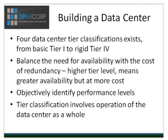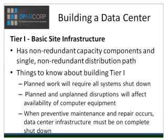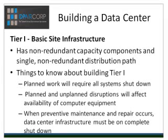If operators building a data center have very basic requirements consistent with a server room, they may just need to meet the guidelines for a tier one classification. According to the Uptime Institute, a tier one data center has non-redundant capacity components and a single non-redundant distribution path serving the computer equipment. Any planned work on the data center will require most or all the site infrastructure systems to be shut down, and this downtime adversely affects computer equipment systems and the end users. Both planned and unplanned disruptions of any system will affect the availability of the computer equipment, and when preventative maintenance and repairs must be performed, the data center infrastructure must be completely shut down.